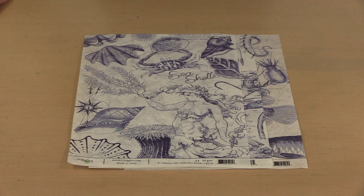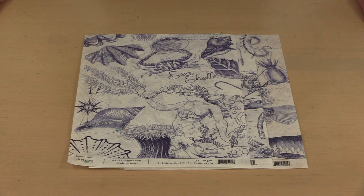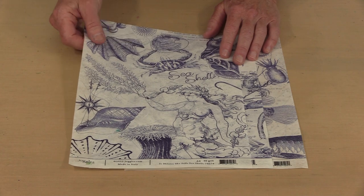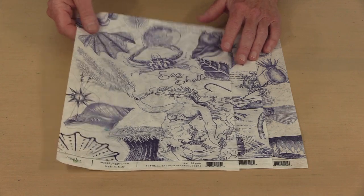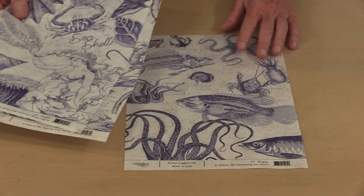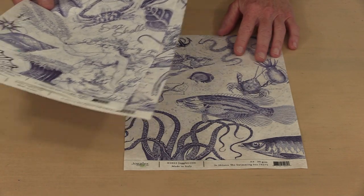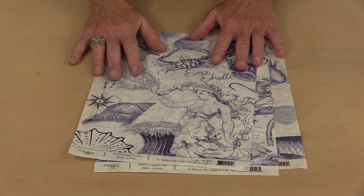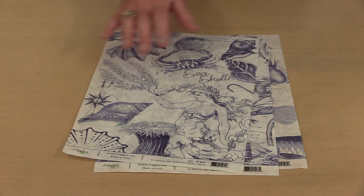There are three papers in this undersea-themed collection from Elizabeth. The first one is Seashells, this is the Aquatic Life, and the final one is The Swimming Sea. They're beautiful just as they are and I've got a couple of small projects started that I want to show you.